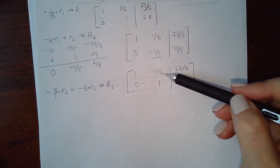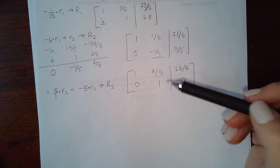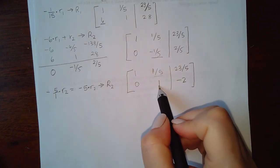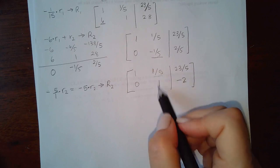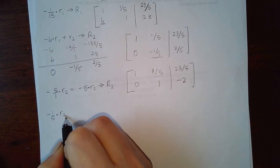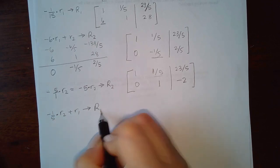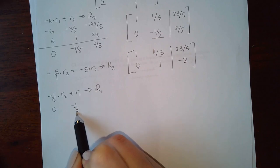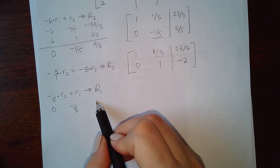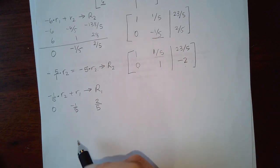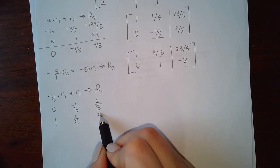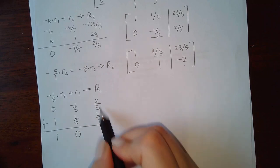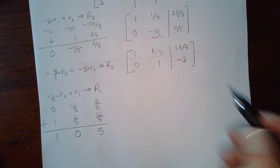Now change the 1/5 in row 1 to a 0. We need the opposite — not the reciprocal — so use -1/5 × row 2 + row 1 to replace row 1. Computing: 0 × (-1/5) = 0; 1 × (-1/5) = -1/5; (-2) × (-1/5) = +2/5. Adding row 1 underneath: 1 + 0 = 1, (1/5) + (-1/5) = 0, and (23/5) + (2/5) = 25/5 = 5.